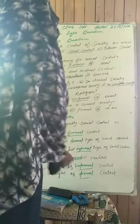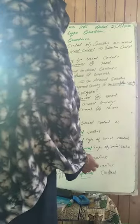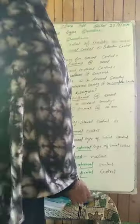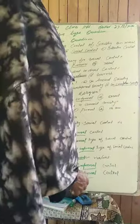And the last one: prison is a blank type of control. Joh prison hai, woh control ka kaunsa type hai? It is formal control.